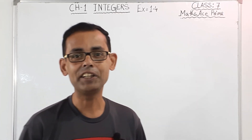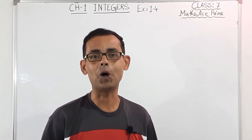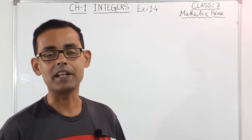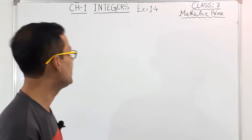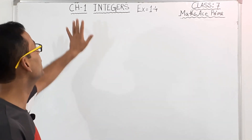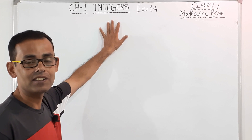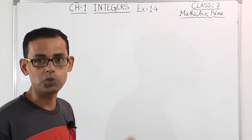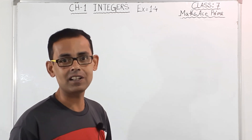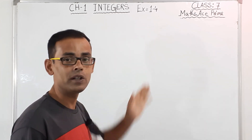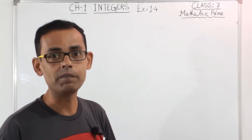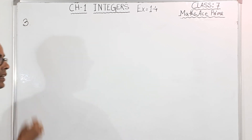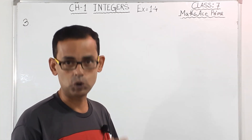Hello everyone. I, Shurujit, welcome you all on Econometrics Day channel. Today we are going to study class 7 mathematics, and we are going to continue with chapter 1 integers. We will continue solving exercise 1.4. In our previous class, we solved 1.4 till question number 2. Now today we are going to solve question number 3, and today's part is part 12.